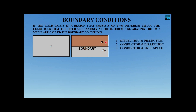We have three cases: the two different media can be dielectric and dielectric, conductor and dielectric, or conductor and free space. In our present discussion we shall discuss the first case — dielectric and dielectric — which is Part 1. In Part 2 we shall discuss the second and third possibilities.